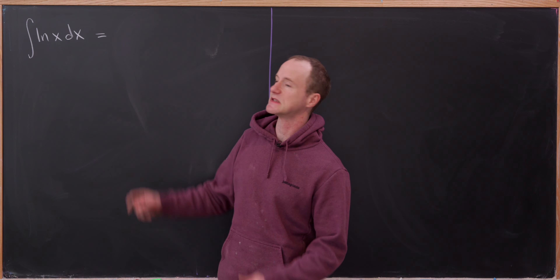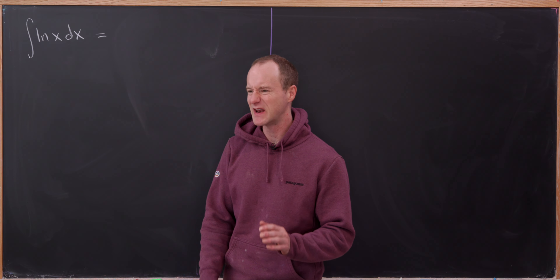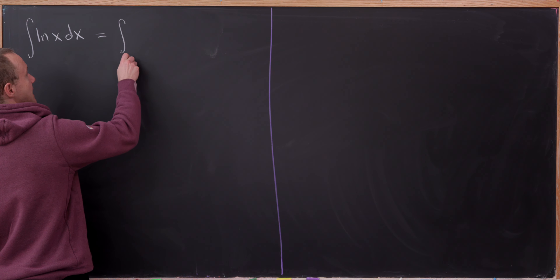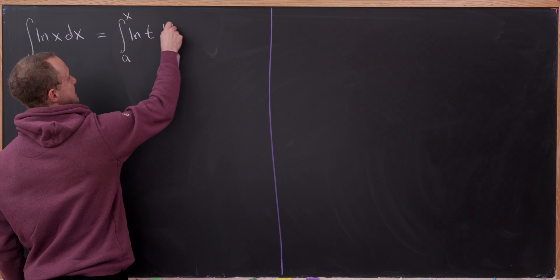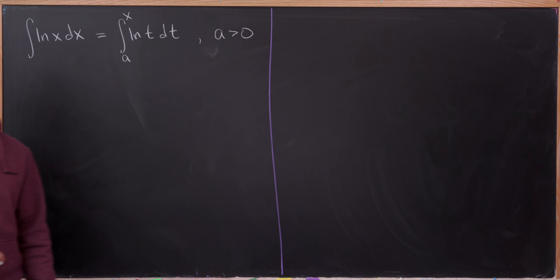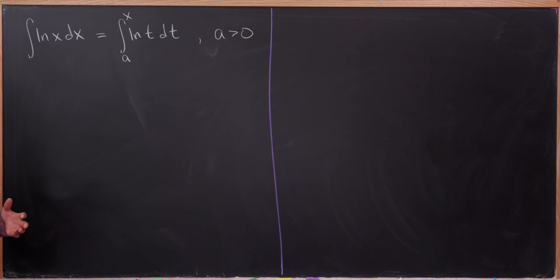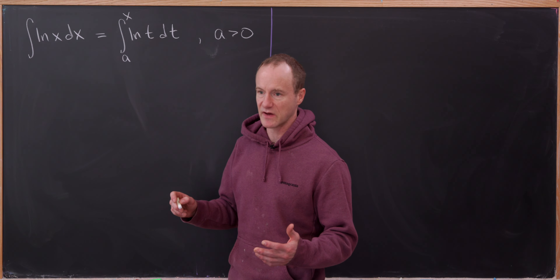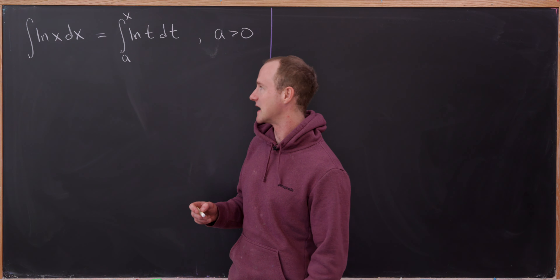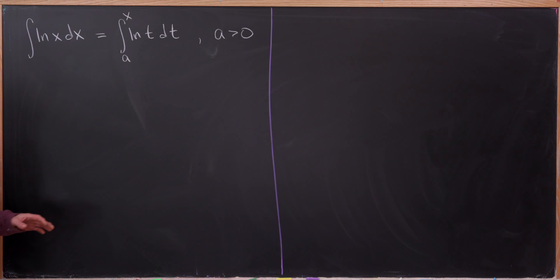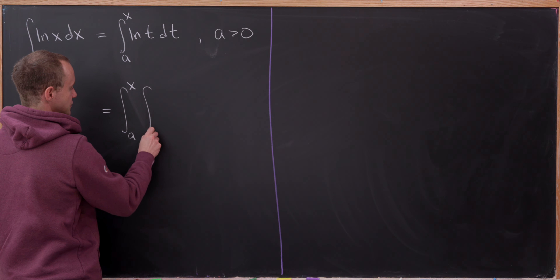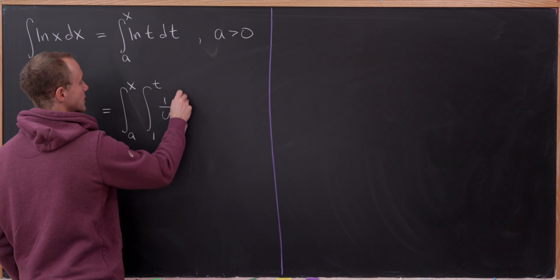So we're going to start by taking this antiderivative and write it in a way that it looks like a definite integral — a more proper way of writing an antiderivative. I'm going to write this as the integral from a up to x of the natural log of t dt, where a is really any positive number. Then we replace our natural log function with its integral representation: the integral from a to x of the integral from 1 to t of 1 over u du dt.